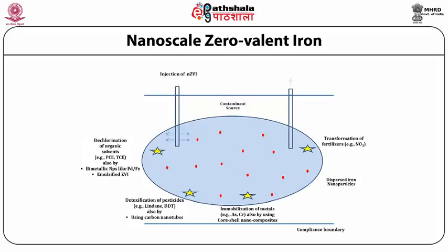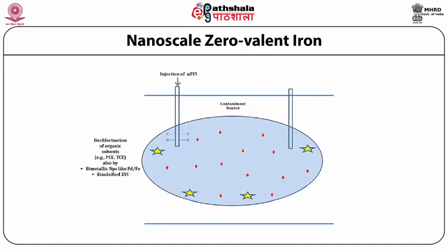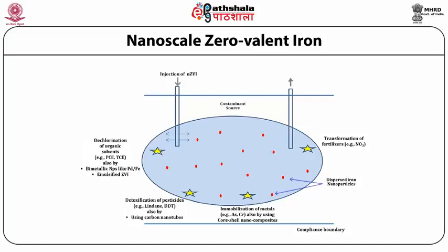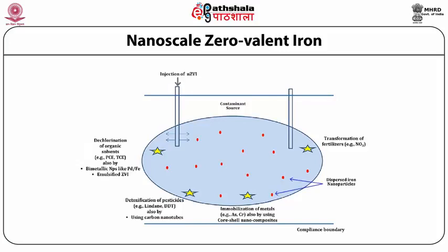Carbon nanotubes can be used for the detoxification of pesticides, especially organochlorine pesticides like lindane and DDT. Core-shell nanocomposites — where nanoparticles are incorporated into thin films — also have capability for removal of heavy metals by immobilization. Dispersed nanoparticles also have the capability for transformation of fertilizer compounds. By injecting nanoscale zero valent iron, we can enhance the bioremediation of contaminated sites.